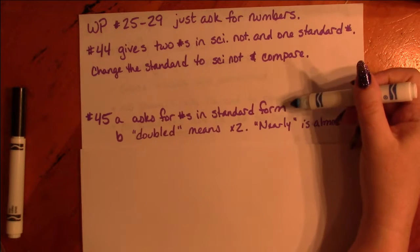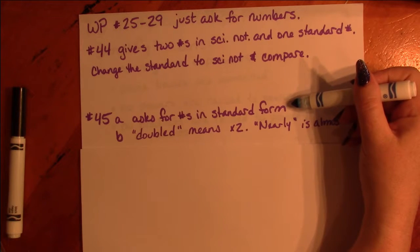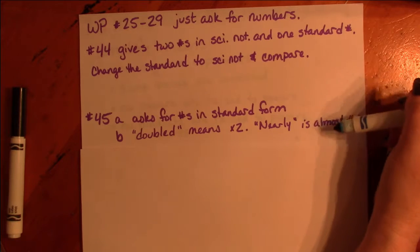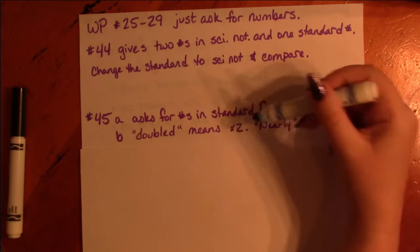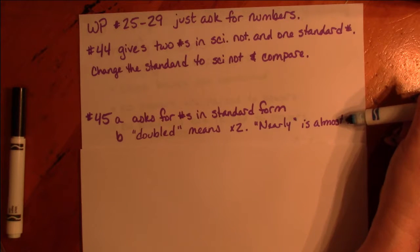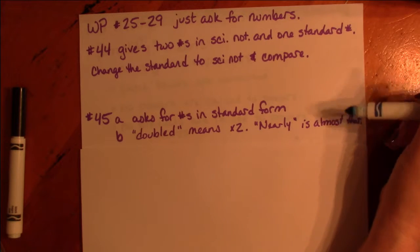Number 45 A asks for the numbers in standard form and then B asks about a number that's doubled, and doubled means times two and nearly means almost that. Other than that, it's pretty straightforward.